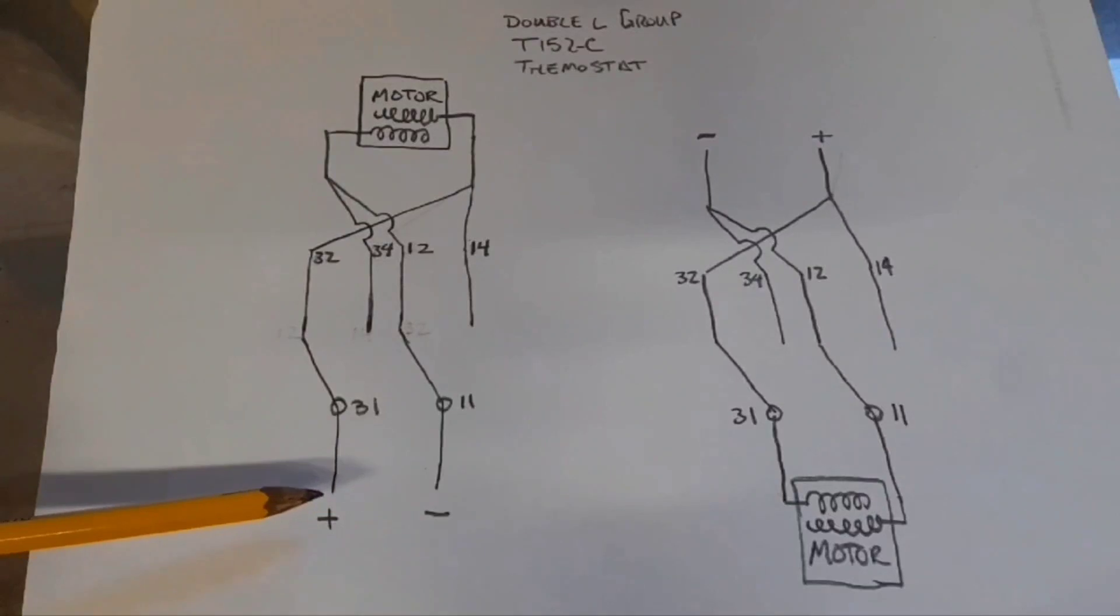Originally, I wired it with the positive and negative coming from the 24-volt transformer to the bottom two pins on the unit, which are 11 and 31. So I'll have my positive path go to one side of the motor. My negative path go to the other side of the motor.